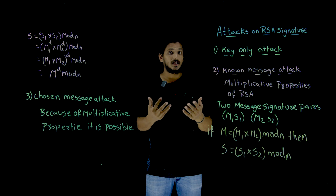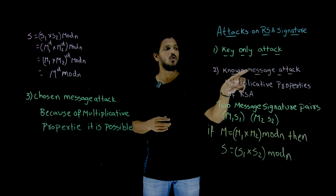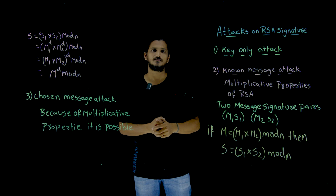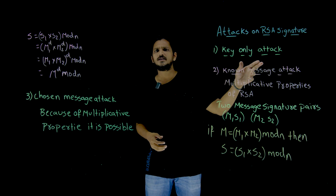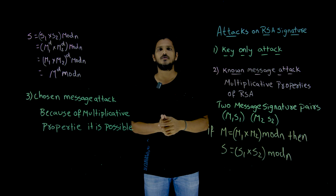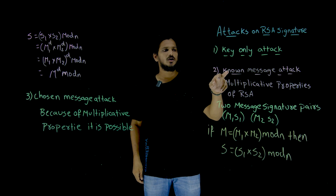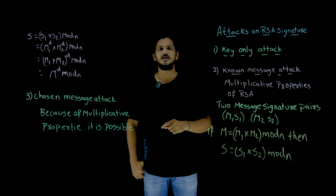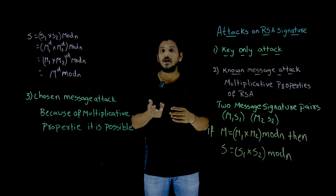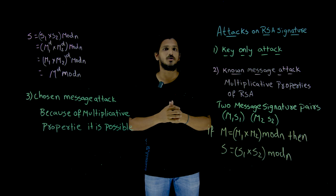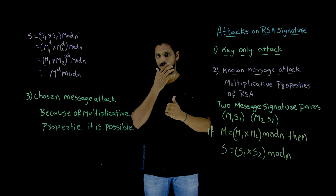Now coming to the next attack that is possible on digital signature: the known message attack. This is very much similar to the known plaintext attack which we discussed in cryptography encryption stages. Here we call it as known message attack. Because RSA is having a multiplicative property, it is possible to have a known message attack.